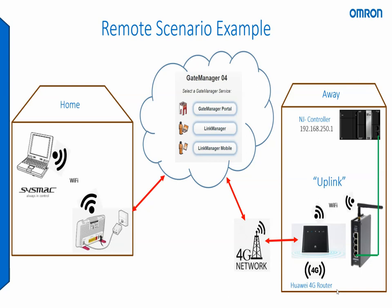At the remote location — where the machine would be — you can see the NJ controller inside the machine is connected directly via a wired connection to the DEV1 port, the device port on the Omron remote access unit. The uplink method is how the site manager unit accesses the Internet, and in my example I'm going to set it up using a Wi-Fi connection to a 4G router.